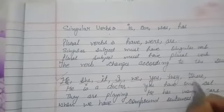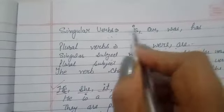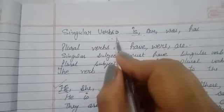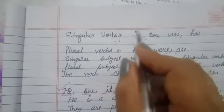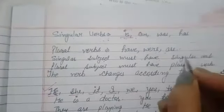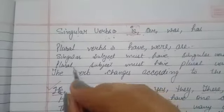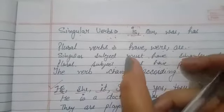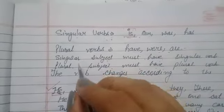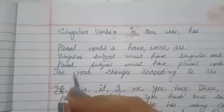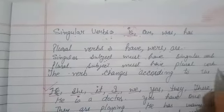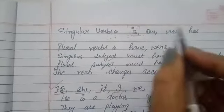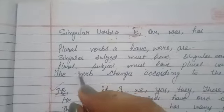For example, 'He is a boy' — 'he' is used for a single person, so we use 'is' with it. The rule is: singular subject must have singular verb, plural subject must have plural verb. This is the relationship between subject and verb. Before using a verb, we must first identify the subject, then choose the verb accordingly.